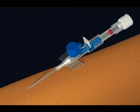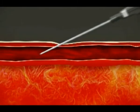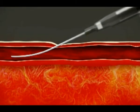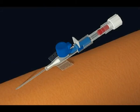On needle insertion, the flashback blood is instantly visible in the transparent flashback chamber, confirming that the needle tip is in the vein.